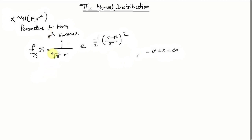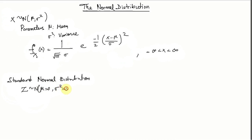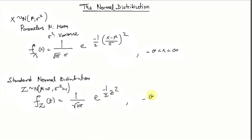A particular case of the normal distribution is the standard normal distribution. The standard normal distribution is a normal distribution with mean 0 and sigma squared equals 1. Its probability density function is 1 over the square root of 2 pi times e to the power of negative one half z squared, where z is from negative infinity to positive infinity.